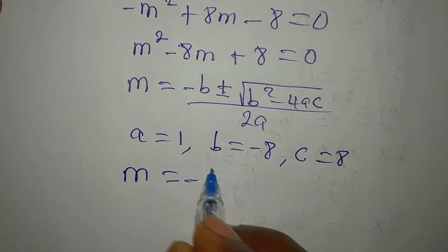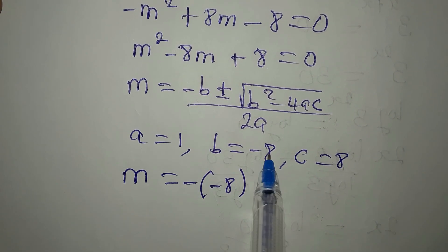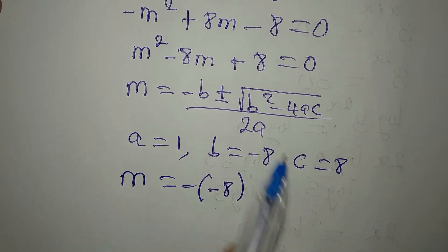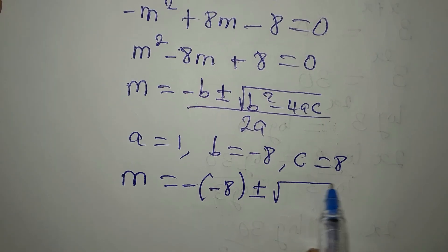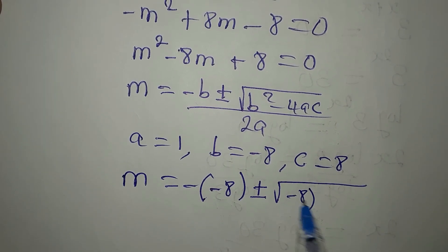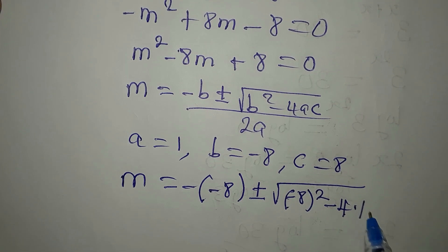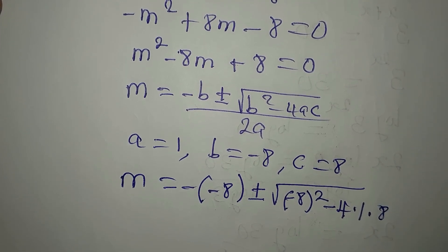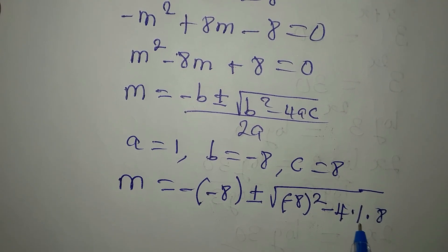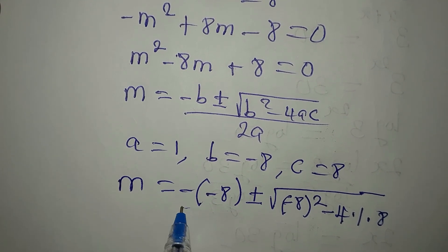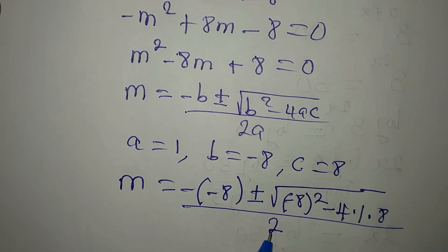So m equals minus minus 8 — because b itself is minus 8 — plus or minus square root of minus 8 squared minus 4 times 1 times 8. Our a is 1 and our c is 8, and we divide all through by 2 times 1, which is 2.